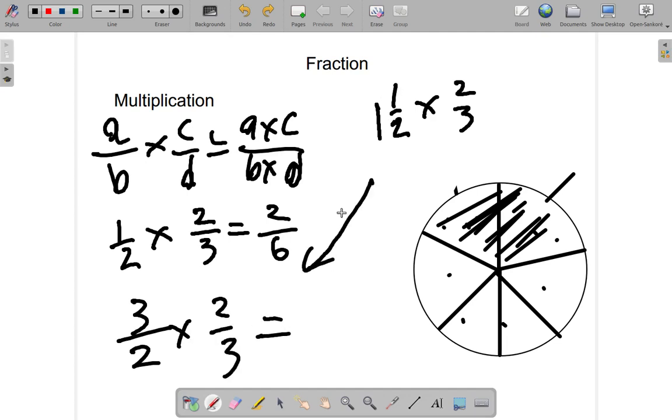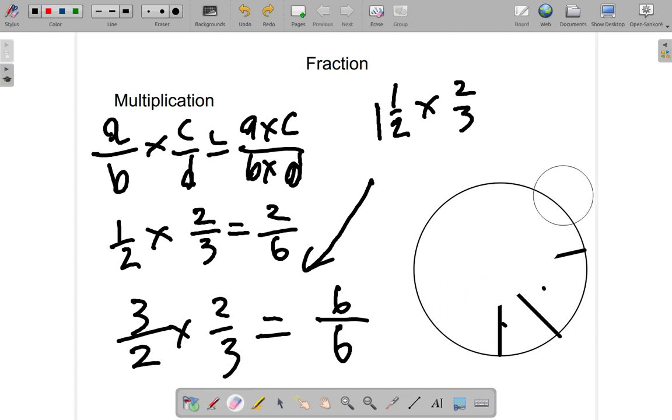Three halves times two thirds gives you three times two, six, over two times three, six. So, three over two times two thirds. Three times two, six, over two times three, six. One whole. In that case.